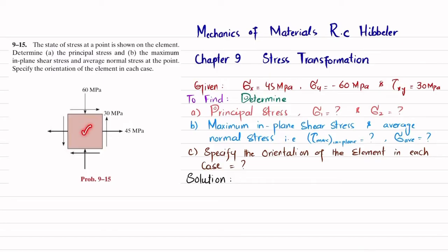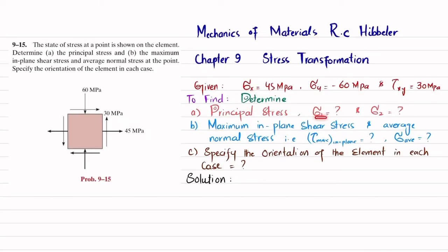You can see this is the state of stress. Sigma X is given as 45 MPa. Sigma Y, which is compressive, is minus 60 MPa, and tau XY is 30 MPa. So all the data are mentioned. We have to find the principal stresses sigma 1 and sigma 2, which are the maximum stresses, and the maximum in-plane shear stress and average normal stress. We also have to specify the orientation of each element.